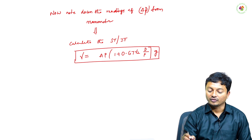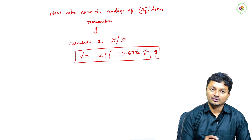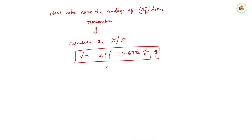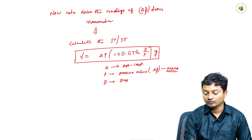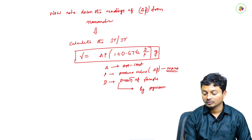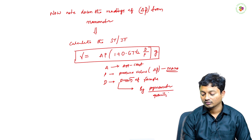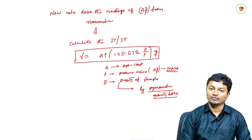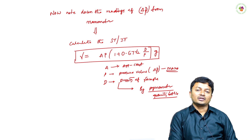After noting the readings, calculate the surface or interfacial tension by the following formula: γ = A·Δp × (1 + 0.67·r₂·Δp / (r₂·d / p)). In this, A is the apparatus constant, p is the pressure value (Δp) obtained from the manometer, and D is the density of the sample — which can be determined using a pycnometer or specific gravity bottle. This concludes the maximum bubble pressure method.